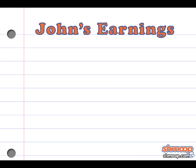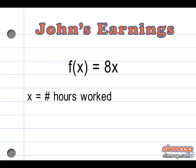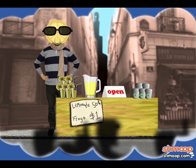John's earnings can be represented by the equation f(x) = 8x, where $8 an hour times x — the number of hours worked since 6 a.m. — will give us the monetary total.